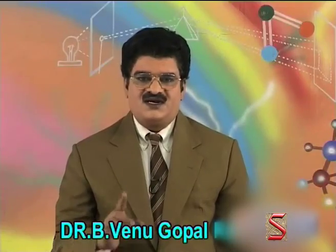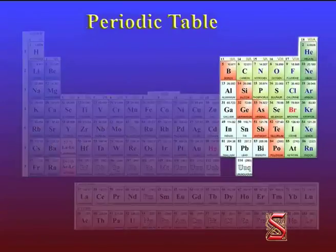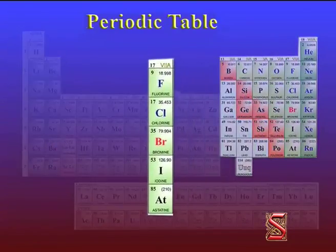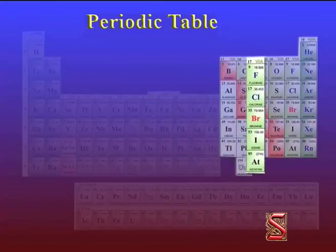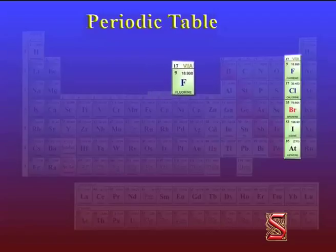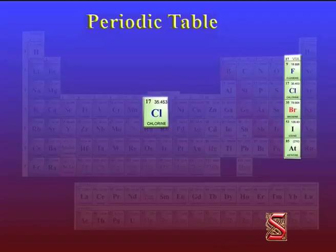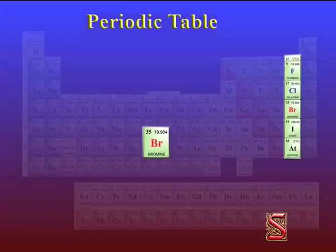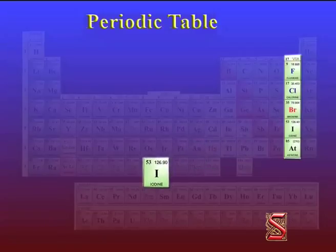Dear students, let us now learn about Seventh A group elements. The Group 7A elements are Fluorine, Chlorine, Bromine, Iodine, and Astatine.